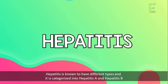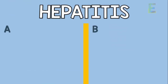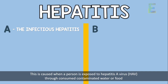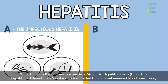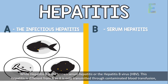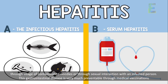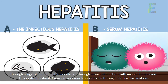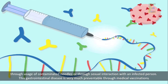Hepatitis is known to have different types and it is categorized into hepatitis A and hepatitis B. Hepatitis A is also known as infectious hepatitis. This is caused when a person is exposed to hepatitis A virus or HAV through consumed contaminated water or food. Hepatitis B is the known serum hepatitis, caused by the hepatitis B virus or HBV. This type is different from A as it is only transmitted through contaminated blood transfusion, through usage of contaminated needles, or through sexual interaction with an infected person. This gastrointestinal disease is very much preventable through medical vaccinations.